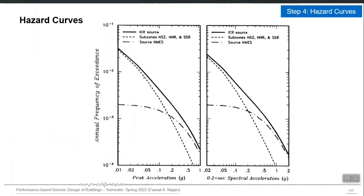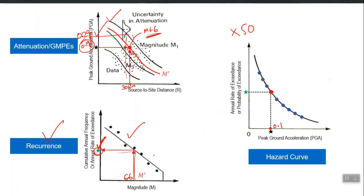Here is an example of different hazard curves. A hazard curve can be constructed for one particular seismic source, and then you can add their probabilities to make a combined hazard curve from all sources. For a particular site with 10 seismic sources, I can have 10 hazard curves and then a combined hazard curve which adds the cumulative frequencies of all 10 curves to get one number.